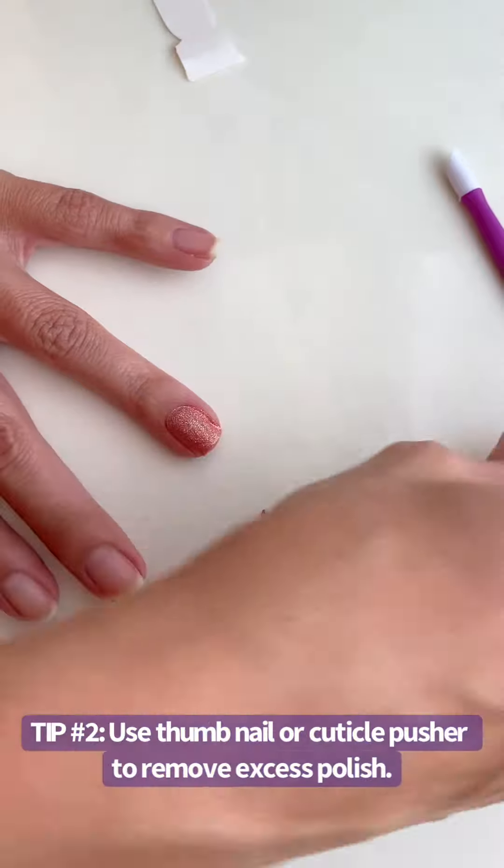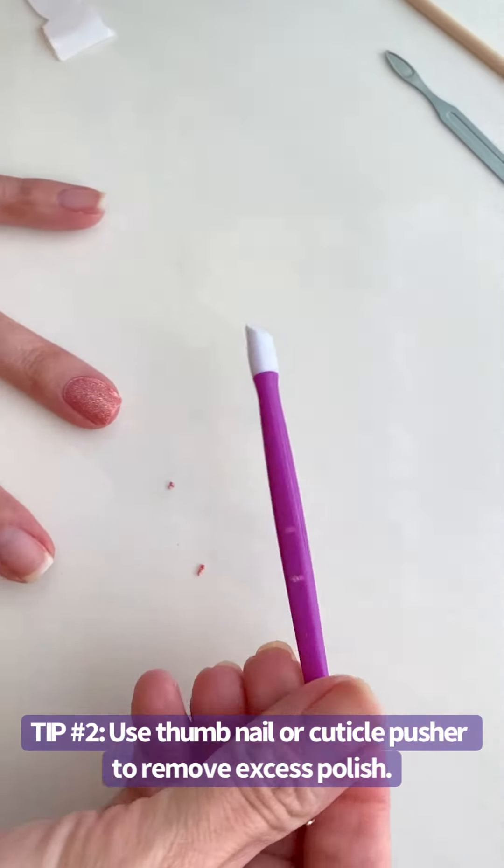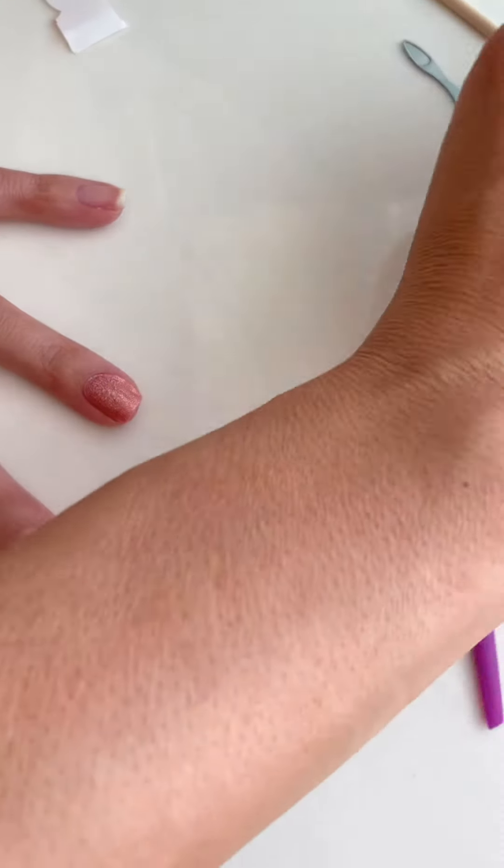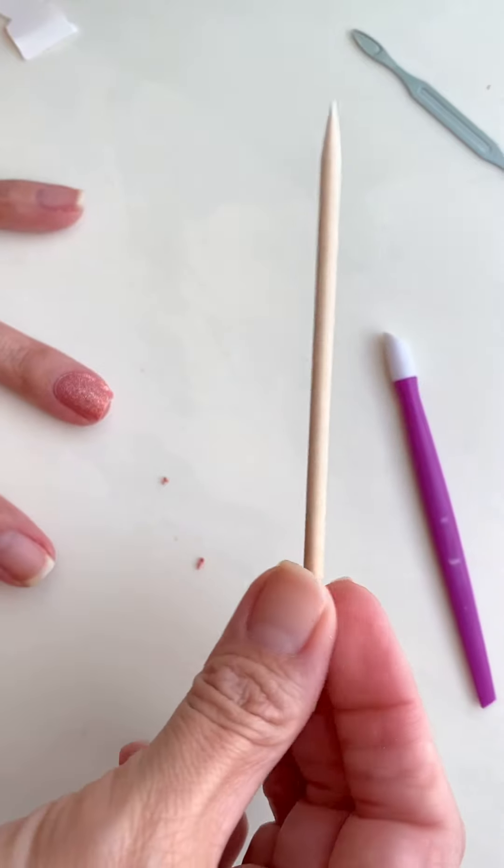Or on this side, here's some other tools that you could use. You could use a rubber cuticle pusher, you could use one of these just orange wooden sticks.